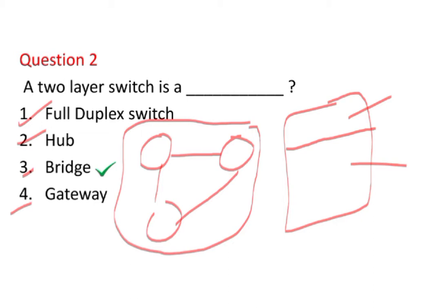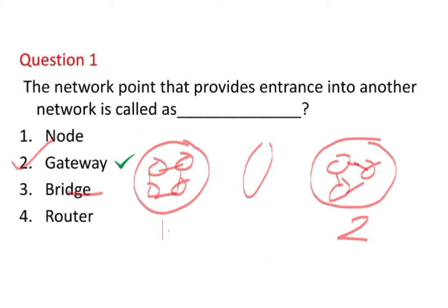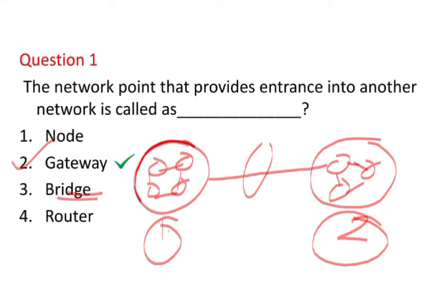It also connects different components so that they appear as parts of a single network. A gateway acts as a gate among networks, working at a node which acts as an entrance for another node. The difference between gateway and bridges is: gateways are used for communication between different LANs, while bridges are used to connect computers within the same network that follow the same protocols.